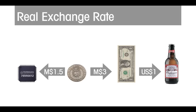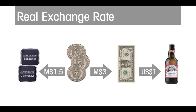So, how many Malaysian semiconductor chips have to be produced in order to import an American beer? $1 for the beer, at 3 for 1, that's 3 ringgits for the dollar. And at 1.5 ringgits each, one can earn the 3 ringgits by selling 2 chips. So the cost of the American beer is 2 Malaysian chips. That represents the real exchange rate.